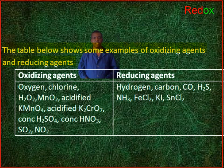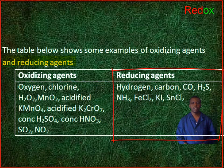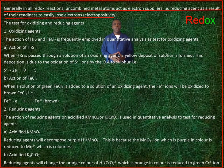Common oxidizing agents include oxygen, chlorine, manganese oxide, acidified potassium permanganate, acidified potassium dichromate, concentrated sulfuric acid, concentrated nitric acid, sulfur dioxide, and nitrogen dioxide. Common reducing agents include hydrogen, carbon, carbon monoxide, hydrogen sulfide, ammonia, iodine chloride, potassium iodide, and tin chloride. Generally, in all redox reactions, uncombined metal atoms act as electron suppliers — that is, reducing agents — as a result of their tendency to lose electrons, that is, electropositivity.